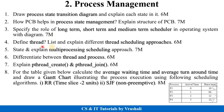The next question is: define thread and list and explain different thread scheduling approaches for 6 marks. Next: state and explain multiprocessing scheduling approaches for 7 marks. Next: differentiate between thread and process — you have to mention a minimum of 6 to 7 differences with examples for 6 marks. Also, given functions like pthread_create and pthread_join, you have to explain those functions for 6 marks.